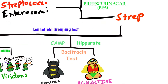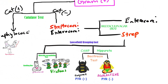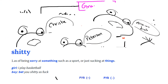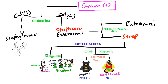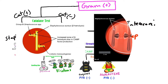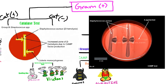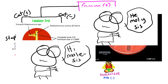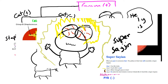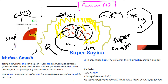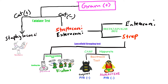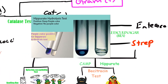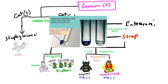The last two tests are the CAMP test and the hippurate test. CAMP stands for Christie-Atkins-Munch-Petersen and is used to specifically identify Streptococcus agalactiae, which has a CAMP factor. The CAMP factor acts synergistically with beta-lysin produced by Staphylococcus aureus, resulting in enhanced hemolysis. Hippurate is a carboxylic acid found in horse urine, and Streptococcus agalactiae can hydrolyze it, so the hippurate test is specifically used to identify GBS.